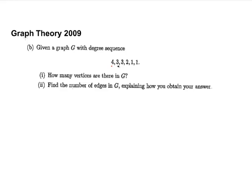How many items are here? 1, 2, 3, 4, 5, 6. There are 6 vertices in graph G. The second part is find the number of edges in G, explaining how you obtained the answer.